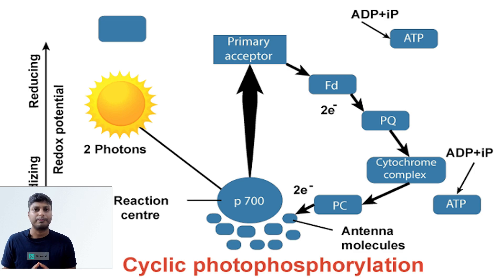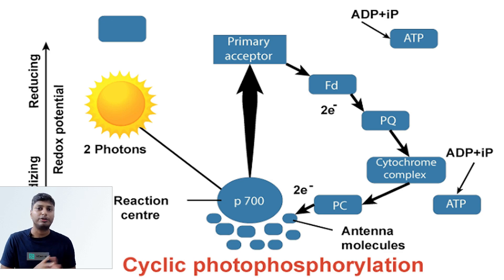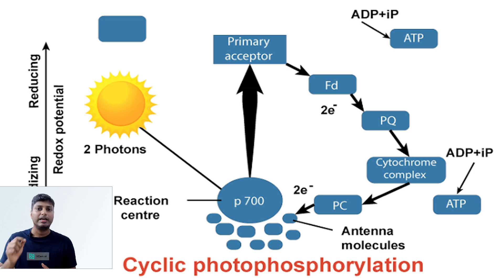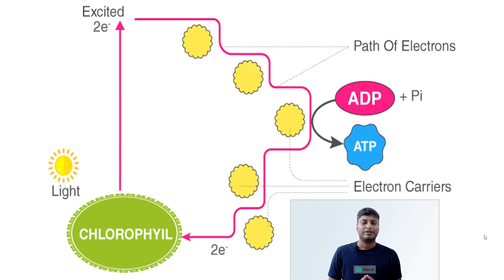The FRS sends the electron to ferredoxin, which sends it to plastoquinone. Plastoquinone sends it to cytochrome b6, cytochrome b6 sends it to plastocyanin, and from plastocyanin the electron comes back to the original photosystem. Since the electron returns back to the photosystem, this pathway is called cyclic. The major advantage of cyclic photophosphorylation is the formation of ATP, which is released when electrons pass from plastoquinone to cytochrome b6.